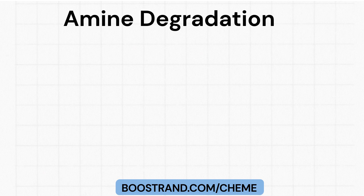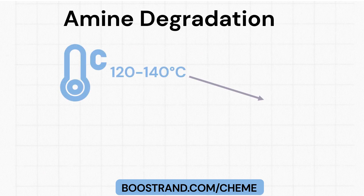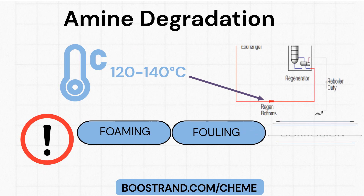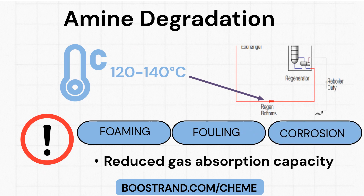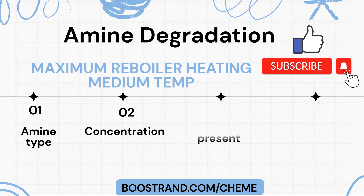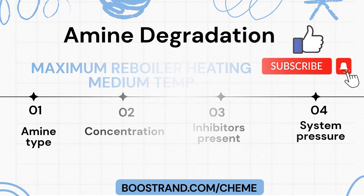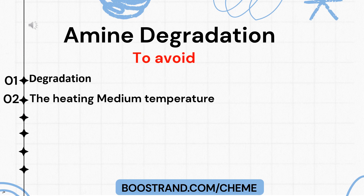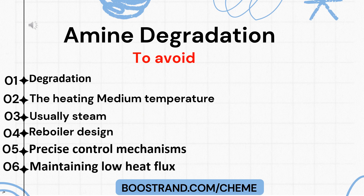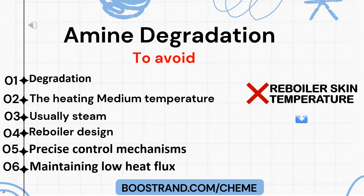The maximum outlet temperature for regenerated amine is typically 120 to 140°C. Exceeding this range risks amine degradation, which can lead to foaming, fouling, corrosion, and reduced gas absorption capacity. The specific maximum temperature depends on the amine type, concentration, inhibitors present, and system pressure. To avoid degradation, the heating medium temperature — usually steam — must be optimized based on steam quality, reboiler design, precise control mechanisms, and maintaining low heat flux. It is highly important to consider proper control of the heating medium inlet temperature to ensure it won't cause a high skin temperature in the reboiler, which can degrade the amine solution.